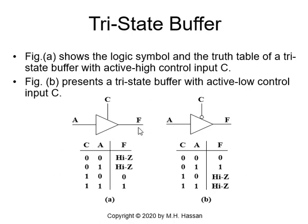The control input C could be active low. In that case, F will be equal to A if C is zero. But if C is one, F will be placed on high impedance or high Z open circuit.